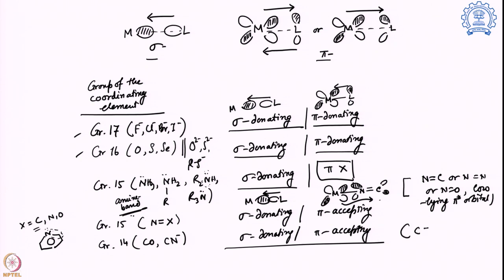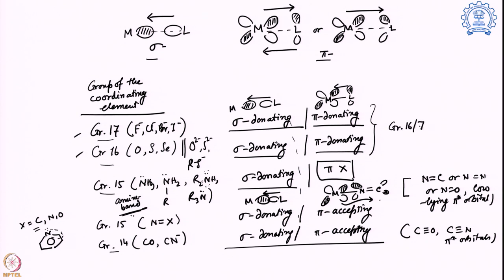For group 14 systems, the C≡O or C≡N pi* orbitals act as the pi-accepting orbitals. So going through the group numbers — group 17, 16, 15, and 14 — we can follow what kind of system is present. All of them are sigma donating; the difference is in the pi symmetry. It is pi donating for groups 16 and 17, no pi contribution for group 15 amines, and pi accepting for group 14 and group 15 when a nitrogen double bond X is present and nitrogen is coordinating.